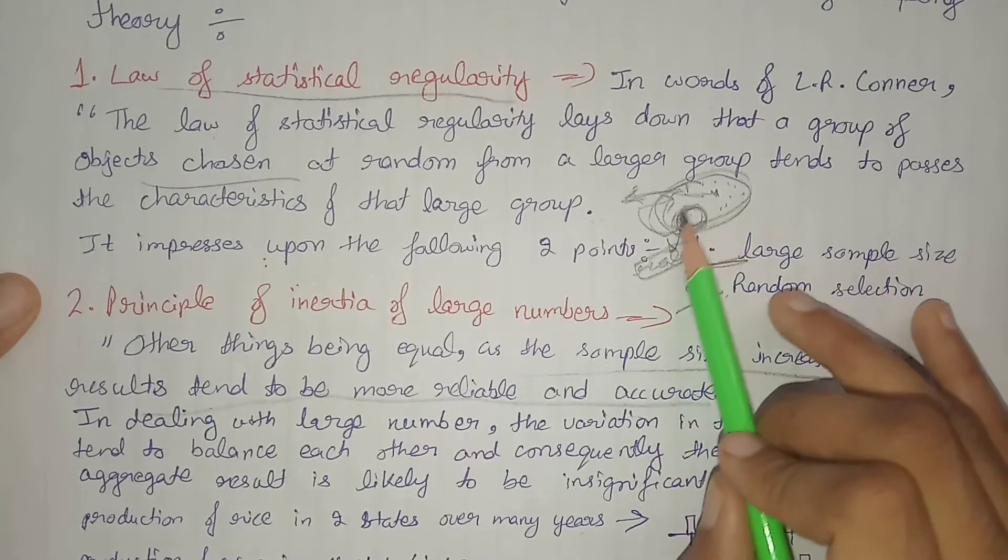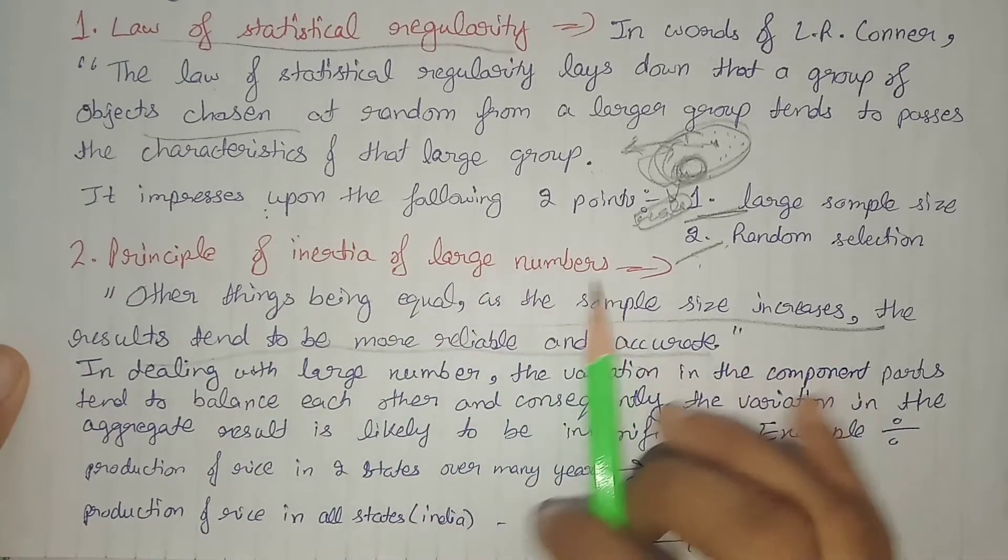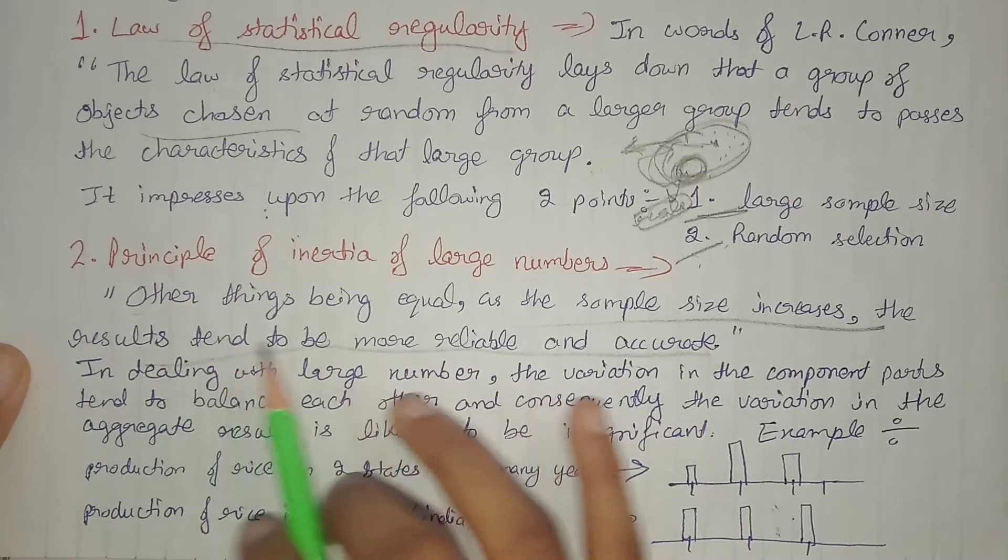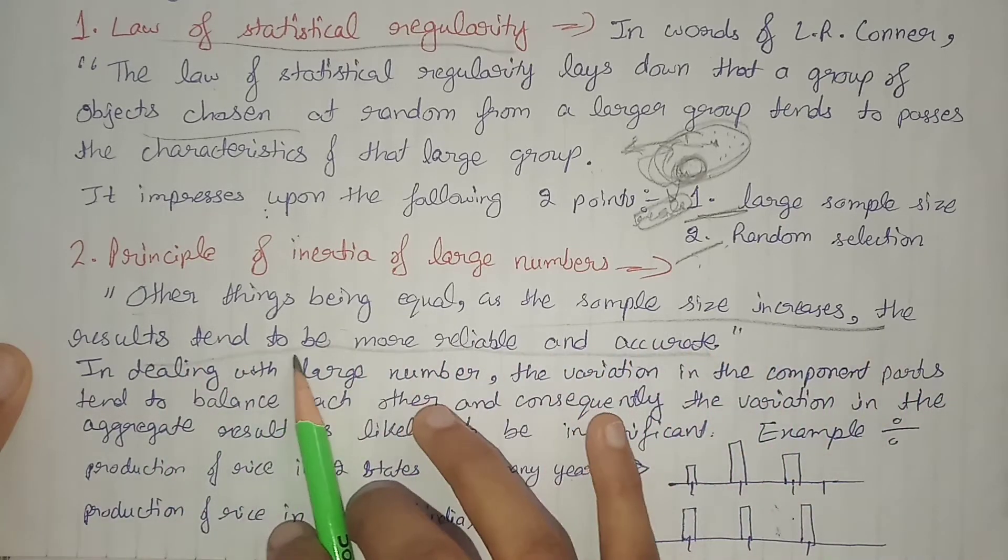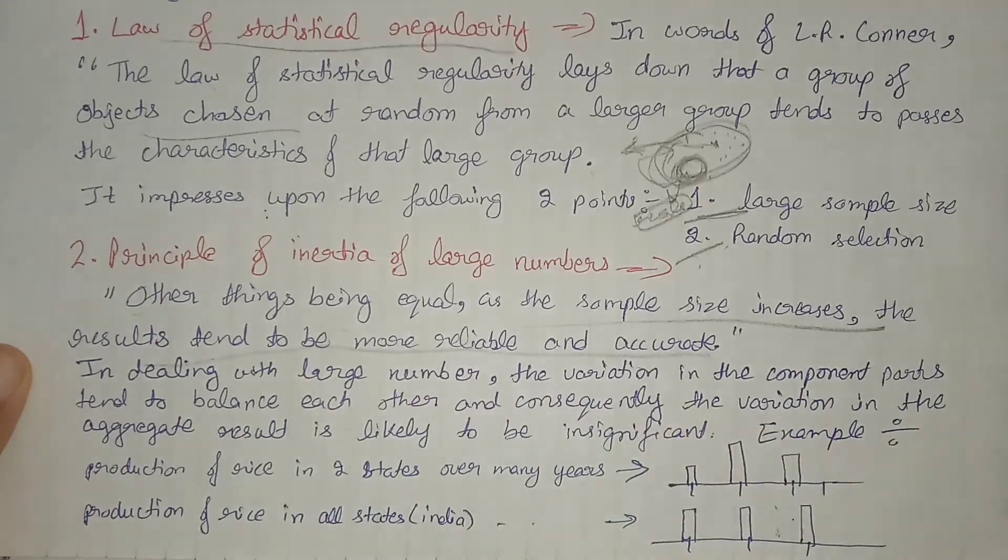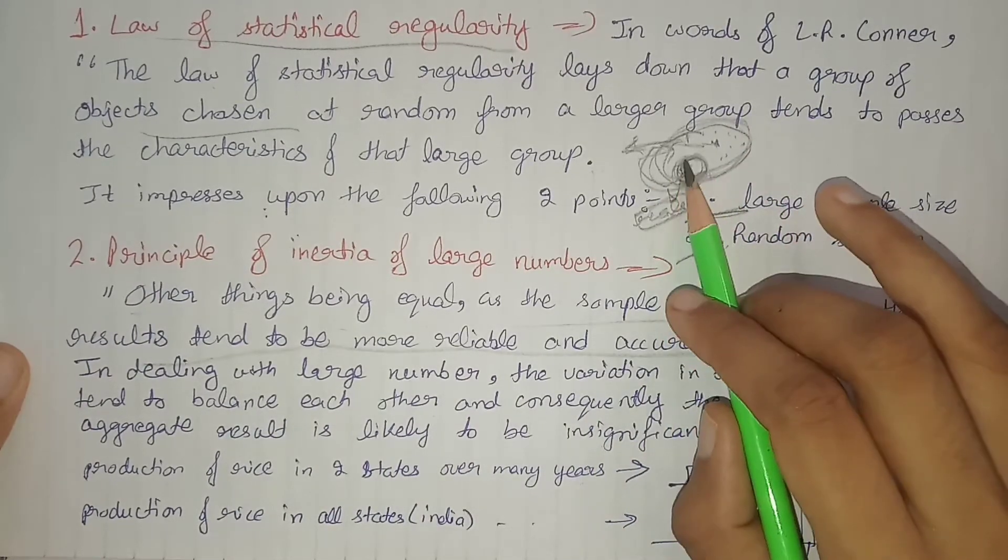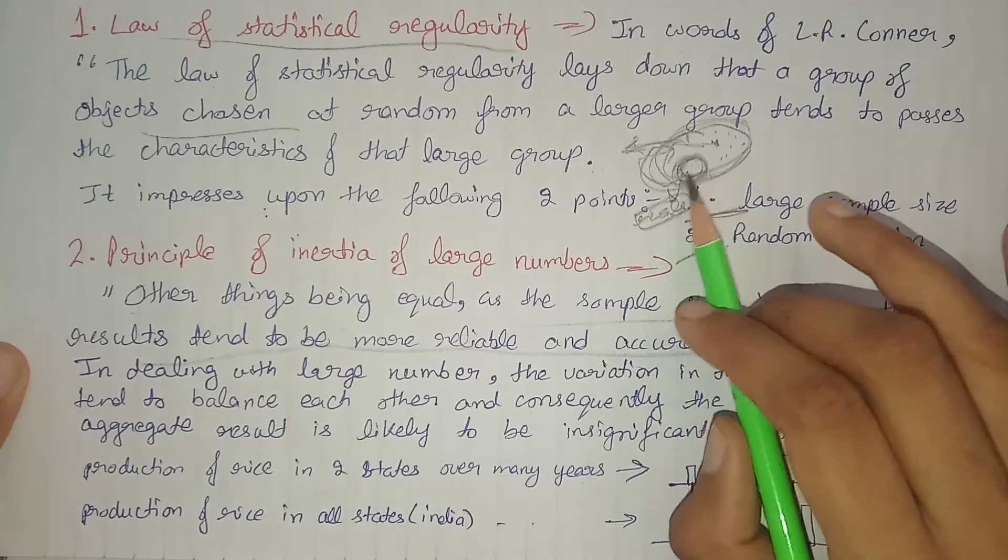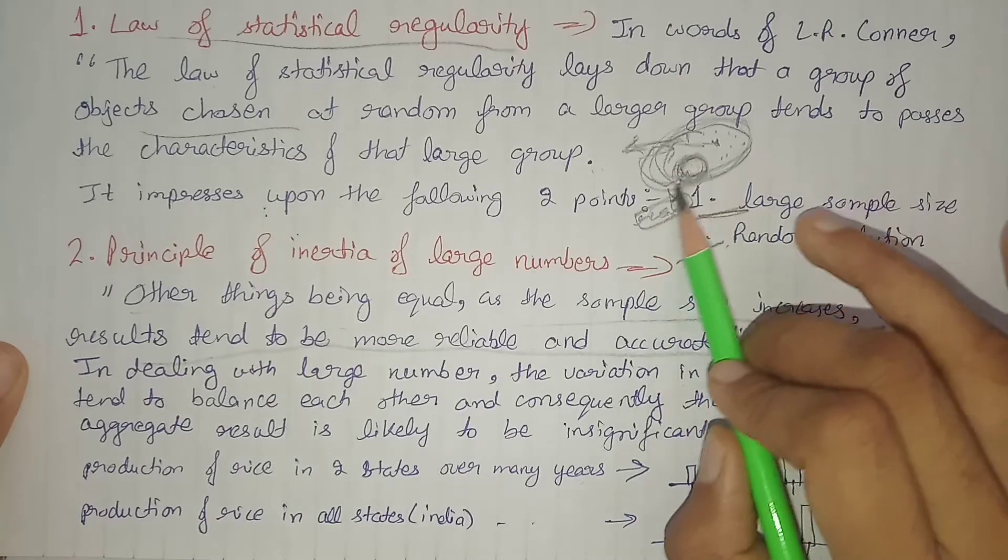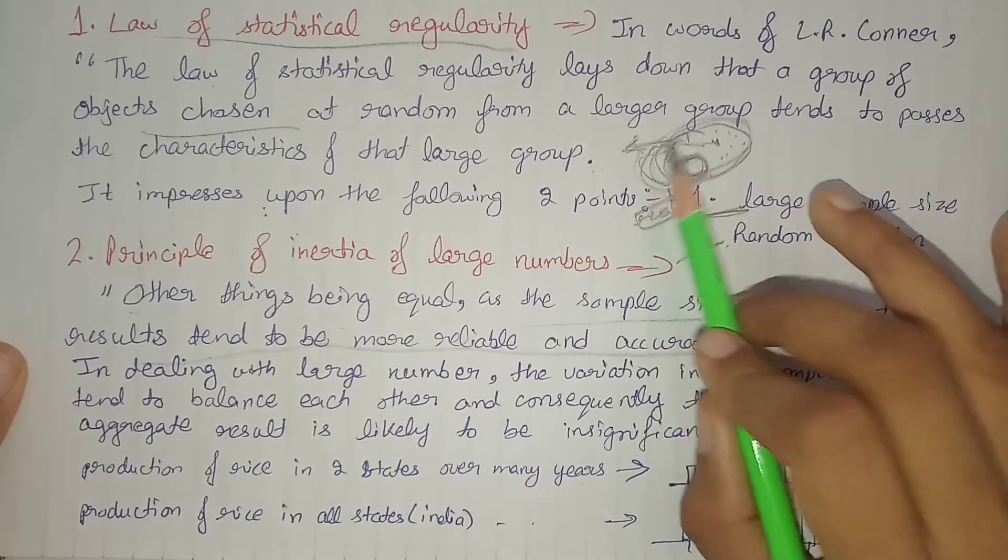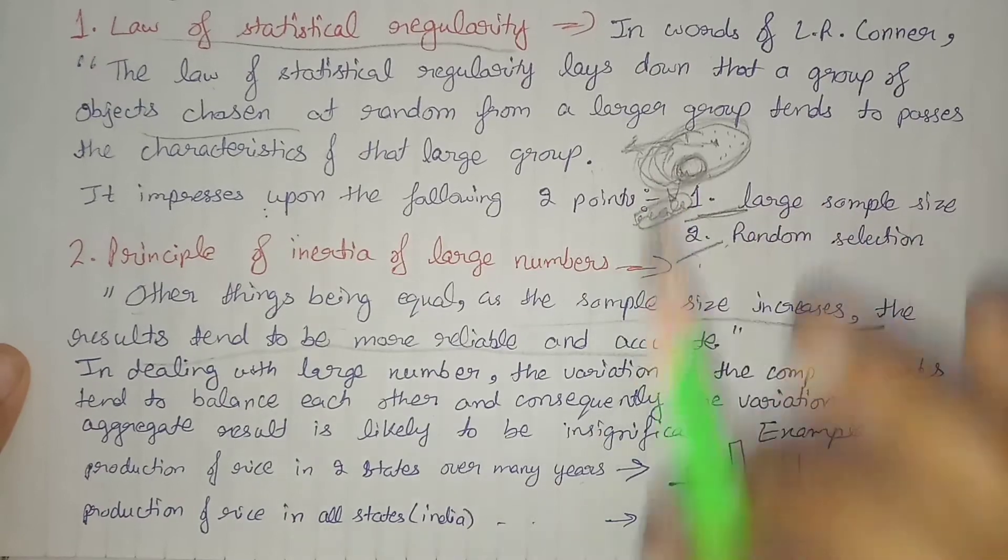The statement is: other things being equal, as the sample size increases, the results tend to be more reliable and accurate. That is, if we take a larger sample from the population, the possibility increases that we can find out more accurate and more reliable characteristics of the population.